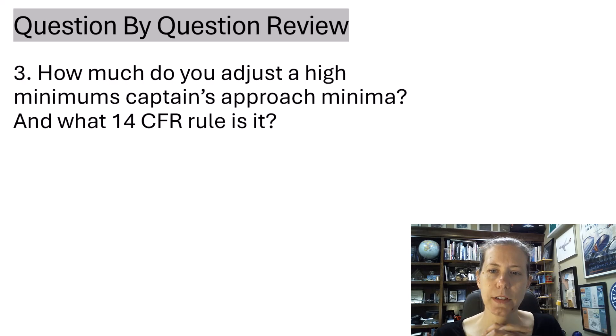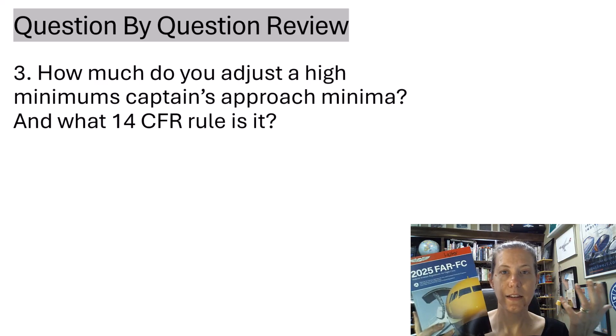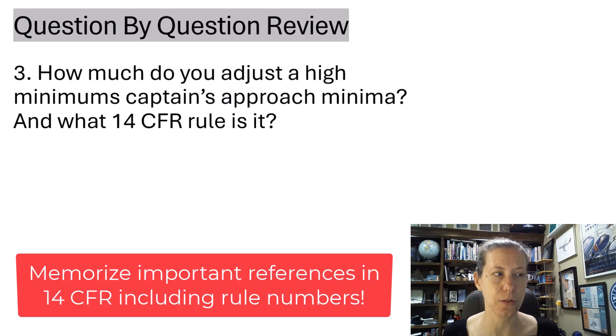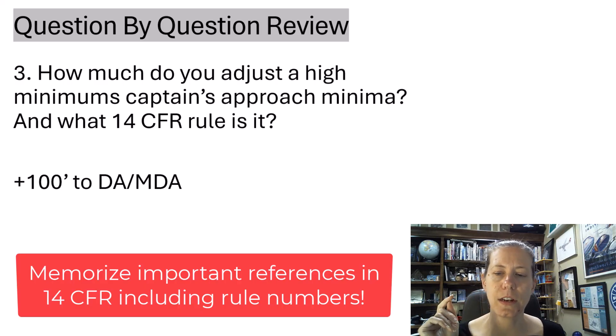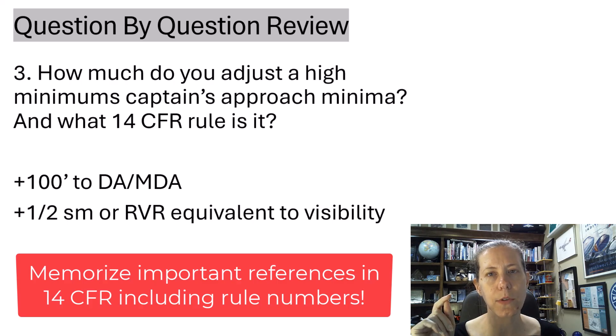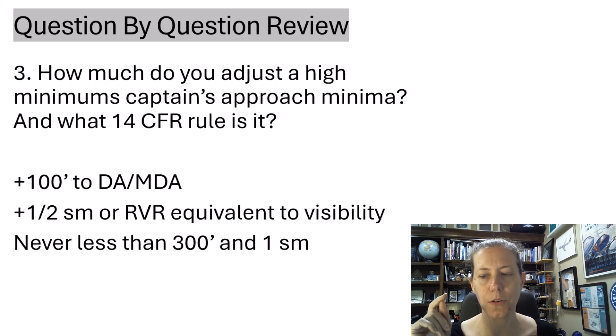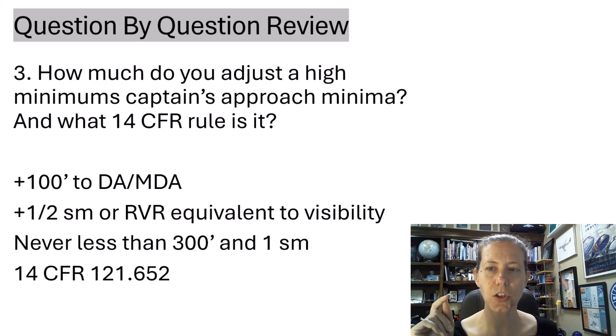Another 14 CFR where this question they actually wanted you to know what is the specific rule number. How much do you adjust a high minimums captain approach minima? That part's easy for me. I honestly, to be totally honest, I did actually have to look it up in my book to figure out what is the actual number of this reg. So first of all, you add 100 feet to the decision altitude or decision height or MDA of the approach, and then you add a half a mile or the RVR equivalent to the required visibility for the approach. It should never be less than 300 feet and one statute mile. And the reference is 121.652.